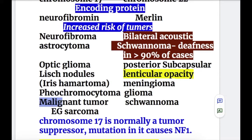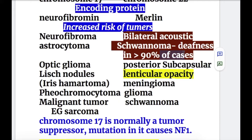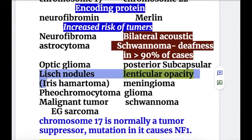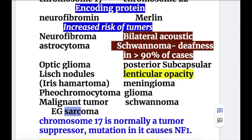The malignant tumor that can occur in NF1 is sarcoma. In NF2, there may occur bilateral acoustic schwannomas, causing bilateral deafness in more than 90% of cases — these are cranial nerve 8 schwannomas. Additionally, posterior subcapsular lenticular opacities can occur in NF2, along with meningioma, glioma, and schwannoma.